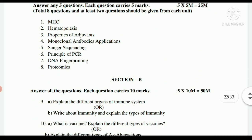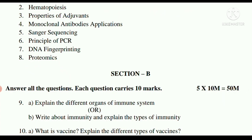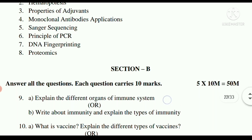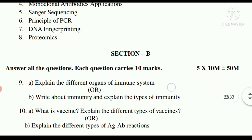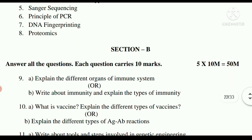Section B: Question 9a — Explain the different organs of the immune system, or write about immunity and explain the types of immunity. Question 10a — What is a vaccine? Explain the different types of vaccines. Question 10b — Explain the different types of antigen-antibody reactions.